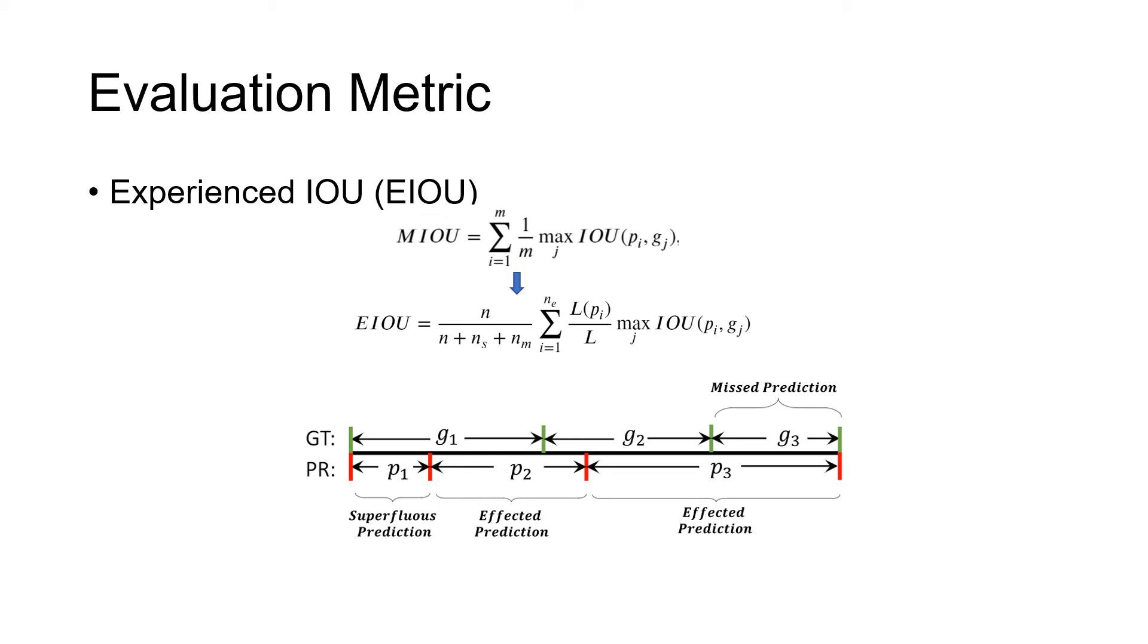So to tackle this limitation, we propose a new evaluation metric, the experienced IoU called EIoU. We penalize both the superficial and missed predictions and add length normalization for the final evaluation.